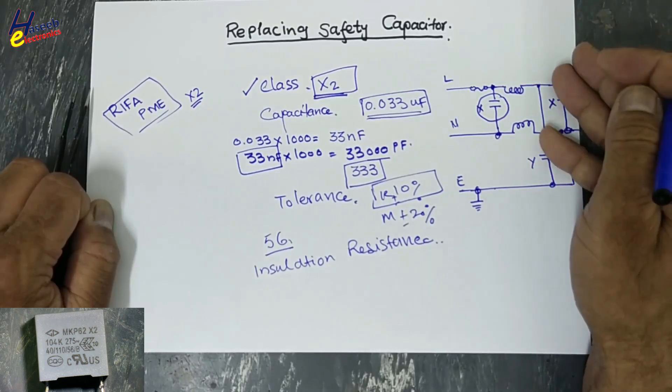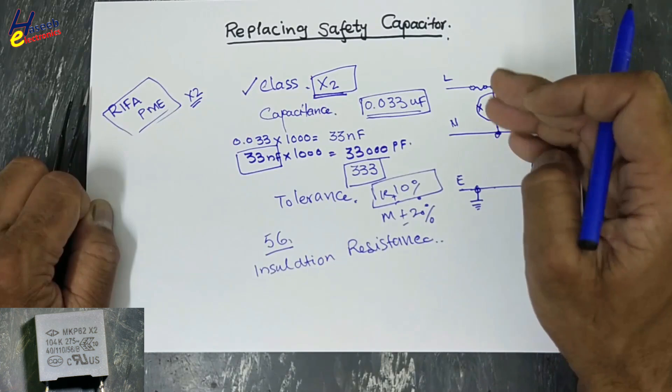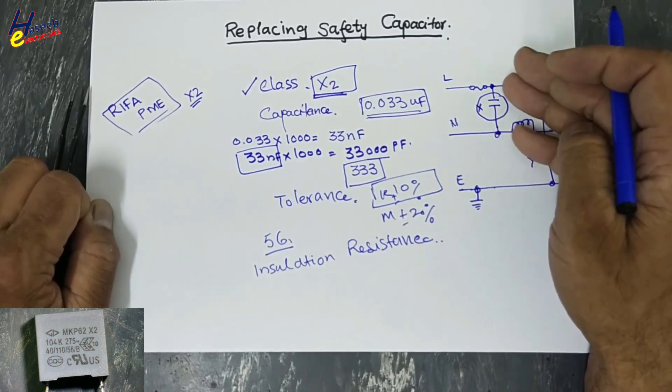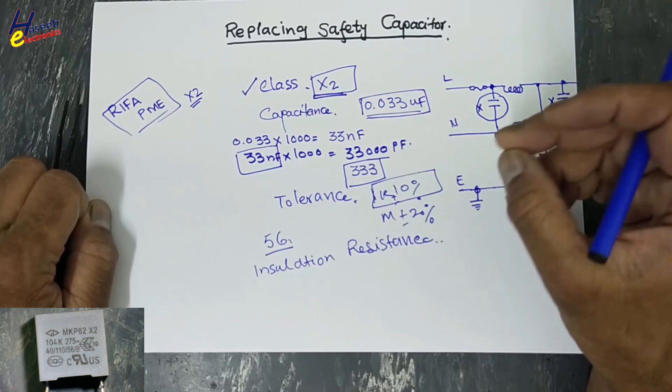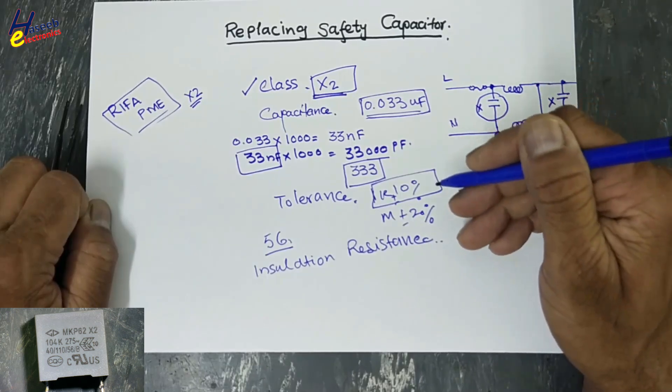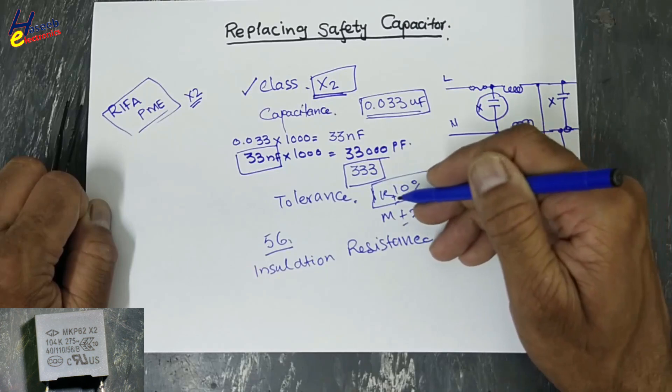That may cause ringing in the circuit. Any other unmatched component may cause ringing or will allow to pass the noises. Then the tolerance. Tolerance must be matched properly. If it is not available, then we can compromise to selecting next higher level.